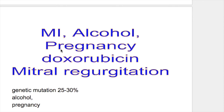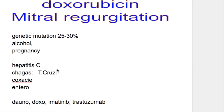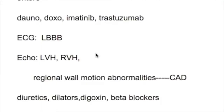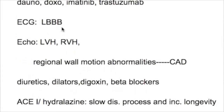The most common causes of dilated cardiomyopathy are myocardial infarction and alcohol. Other causes include doxorubicin, mitral regurgitation, imatinib, and trastuzumab. The ECG finding in dilated cardiomyopathy is left bundle branch block. On echocardiography, biventricular hypertrophy is seen, and regional wall abnormalities indicate coronary artery disease.